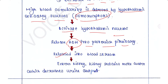From the posterior pituitary, this hormone is released into the bloodstream. Blood carries ADH to the kidneys. The kidneys respond by retaining more water, which decreases urine output.